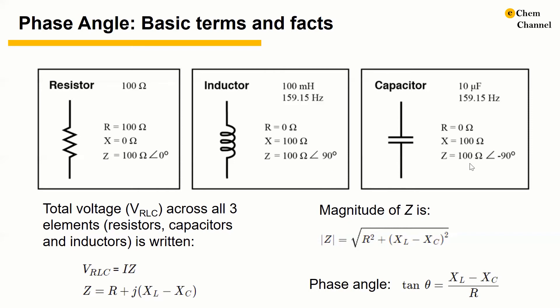For a perfect capacitor, voltage drop always lags current by 90 degrees. So the capacitor's impedance phase angle is negative 90 degrees.